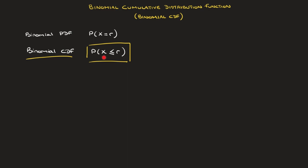Say the discrete random variable X follows a binomial distribution with n trials and the probability of a success is P. Then by definition, X can take on any of the values 0, 1, 2, and so on all the way up to n. Since X is defined as the number of successes in the experiment, within the n trials there can be 0, 1, 2, 3, 4, and so on, all the way up to n successes.